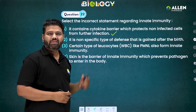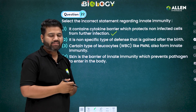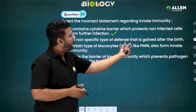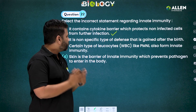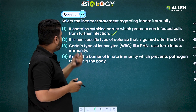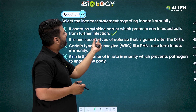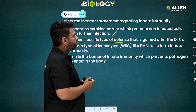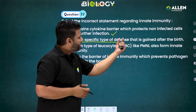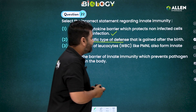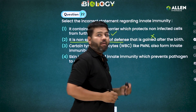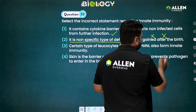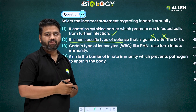The second statement says innate immunity is a non-specific type of defense that is gained after birth. Let's break this down: innate immunity being non-specific is correct, but the part saying it is gained after birth is incorrect — because innate immunity is gained by birth. That's why this statement is incorrect.